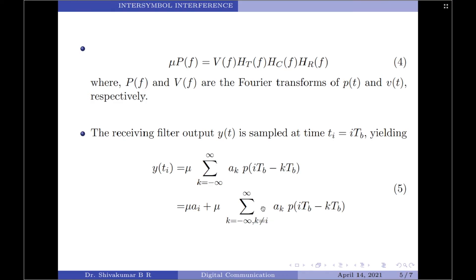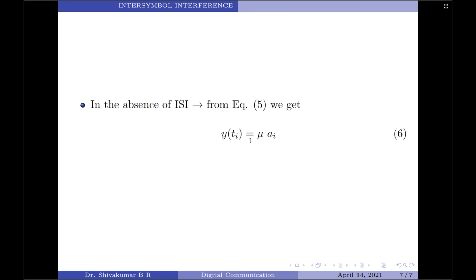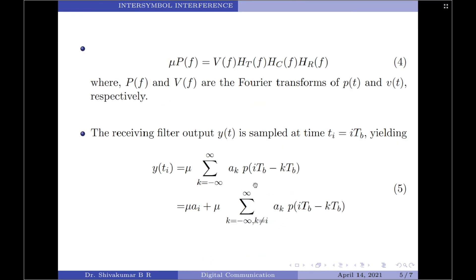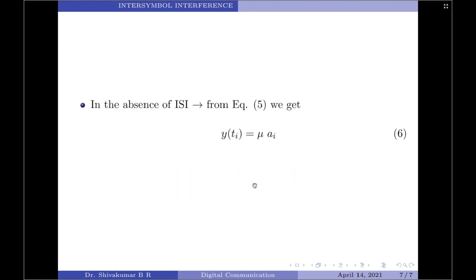To eliminate ISI, one must zero out the second term on the right-hand side of equation 5. In an ideal scenario with no ISI, equation 5 reduces to y(ti) equals mu times Ai. Therefore, if you are asked to design the transmitting and receiving filters, the first and foremost objective should be to minimize the effects of inter-symbol interference and thereby deliver the digital data to its destination with the smallest error rate possible.